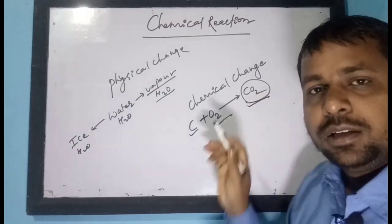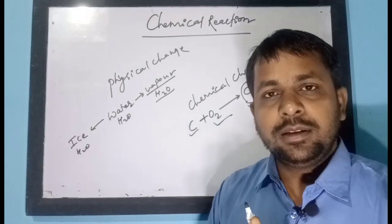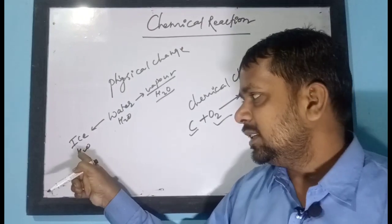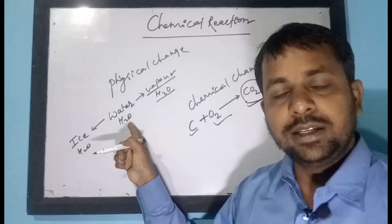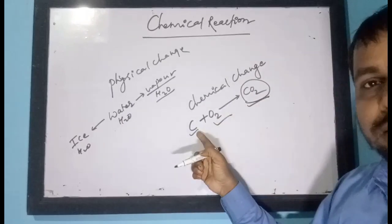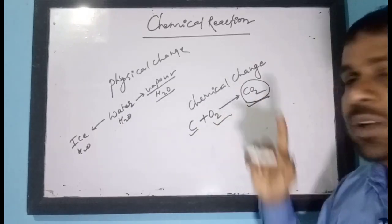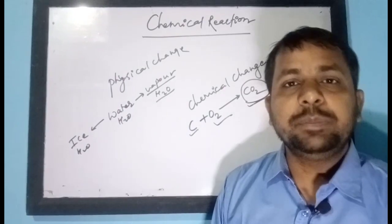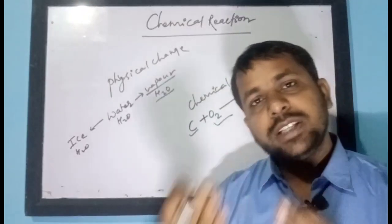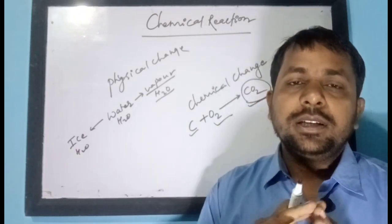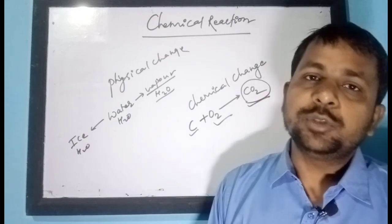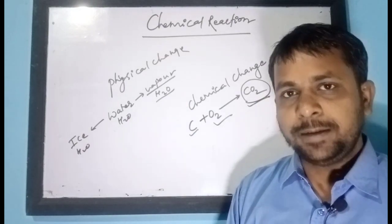In physical change, new substances form but still have the original molecular formula. But here the new substance does not have the original molecular formula — it has a new molecular formula and new chemical properties. So chemical change is a type of change in which new substances are formed with new chemical properties and new chemical composition.